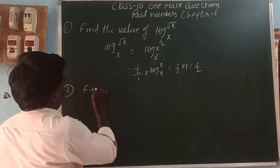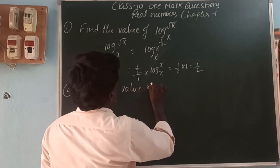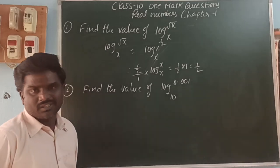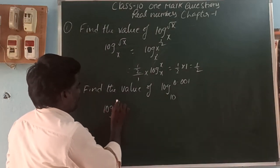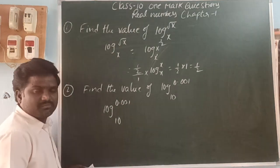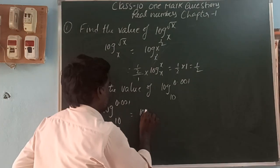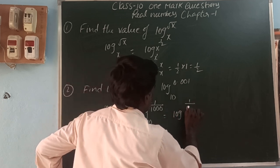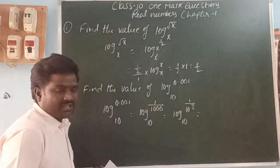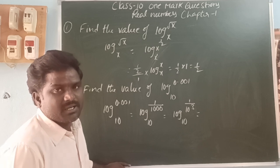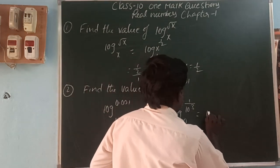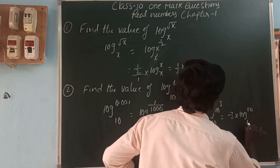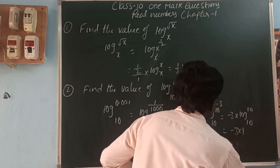Find the value of log(0.001) base 10. Here log(0.001) base 10 — how many base 10 are there? 3. We can write 0.001 as 1/1000, and 1000 we can write as 10 cube, so 1/10³ = 10^(-3). Using the law: a^(-n) = 1/a^n. So that is log(10^(-3)) base 10, which is -3 into log 10 base 10 = -3 into 1 = -3.